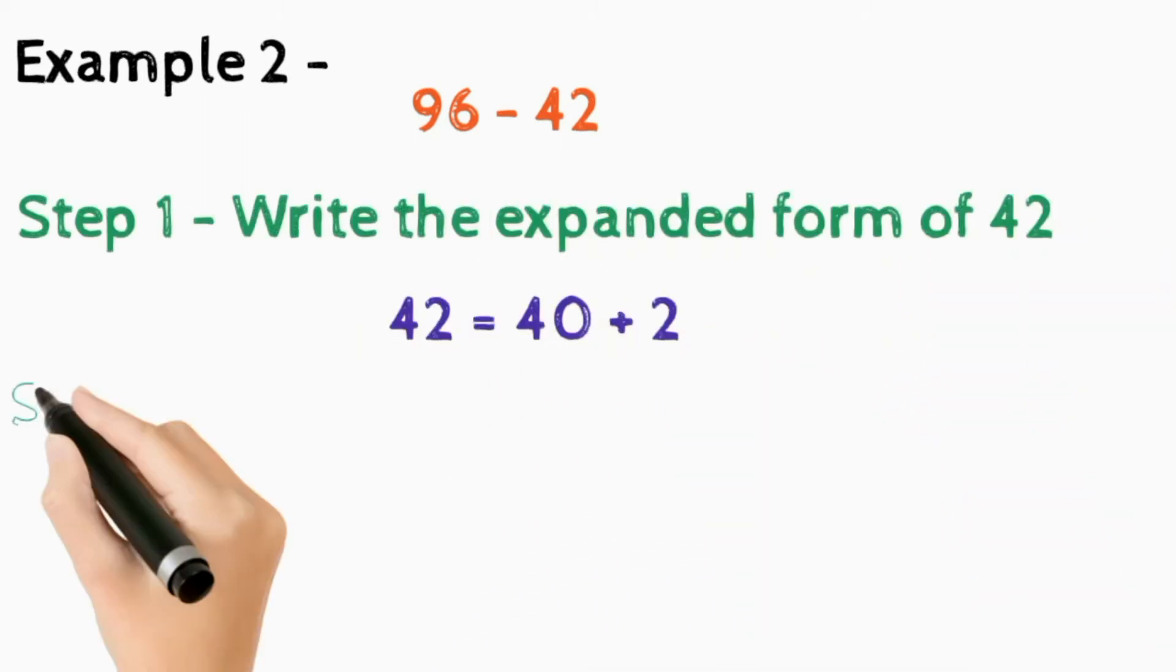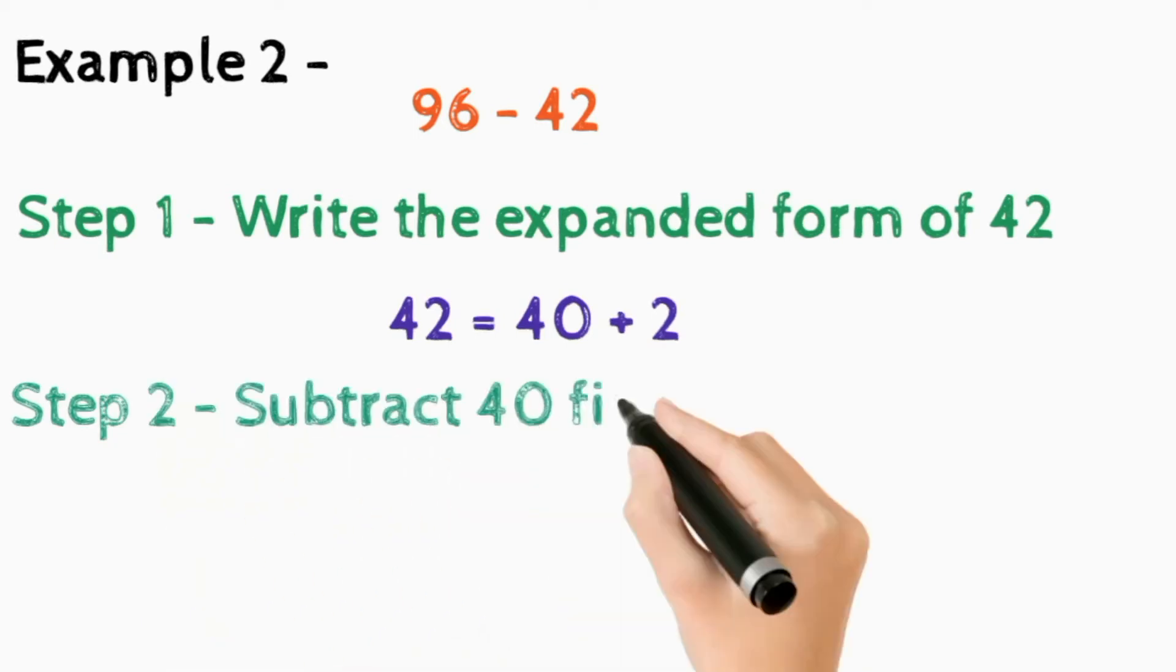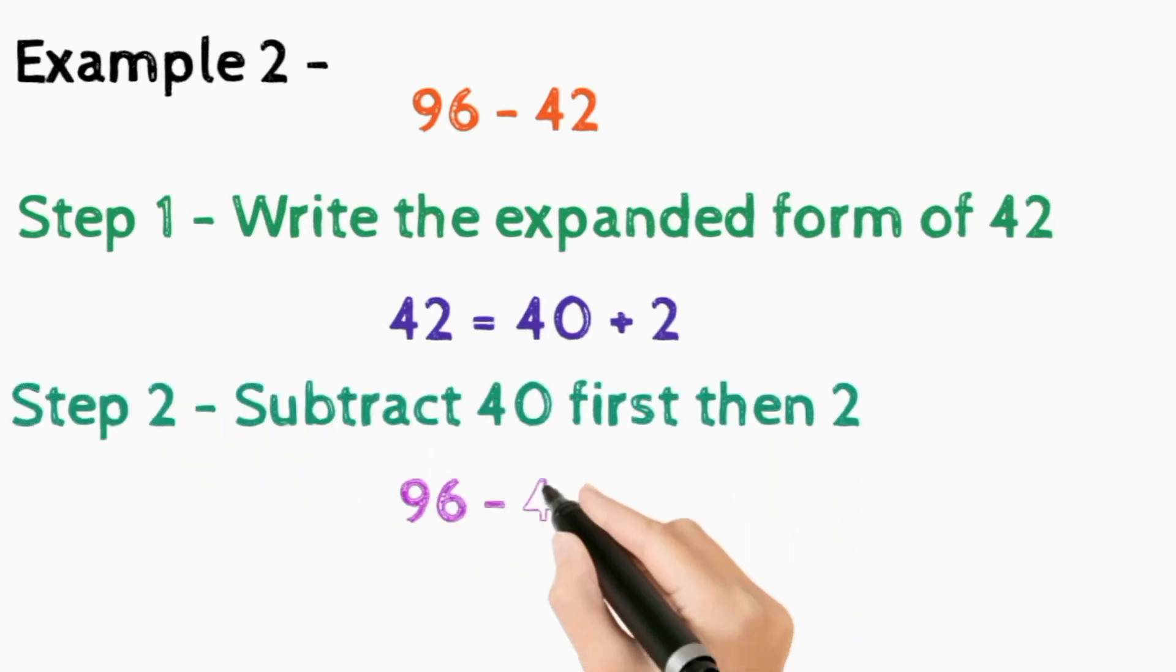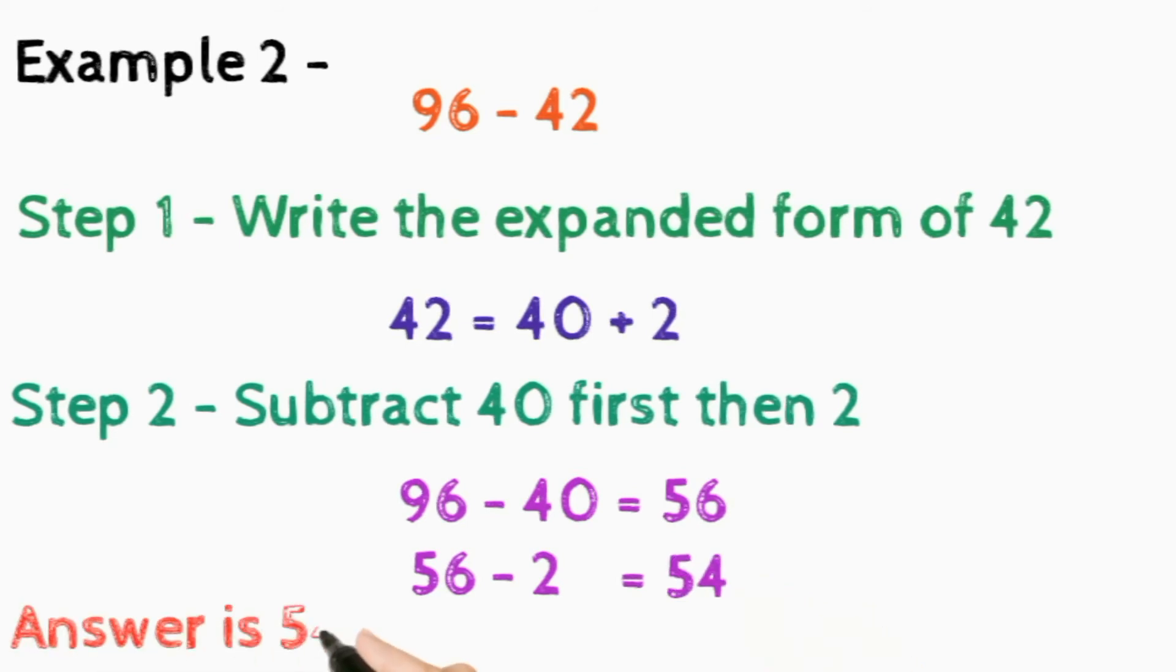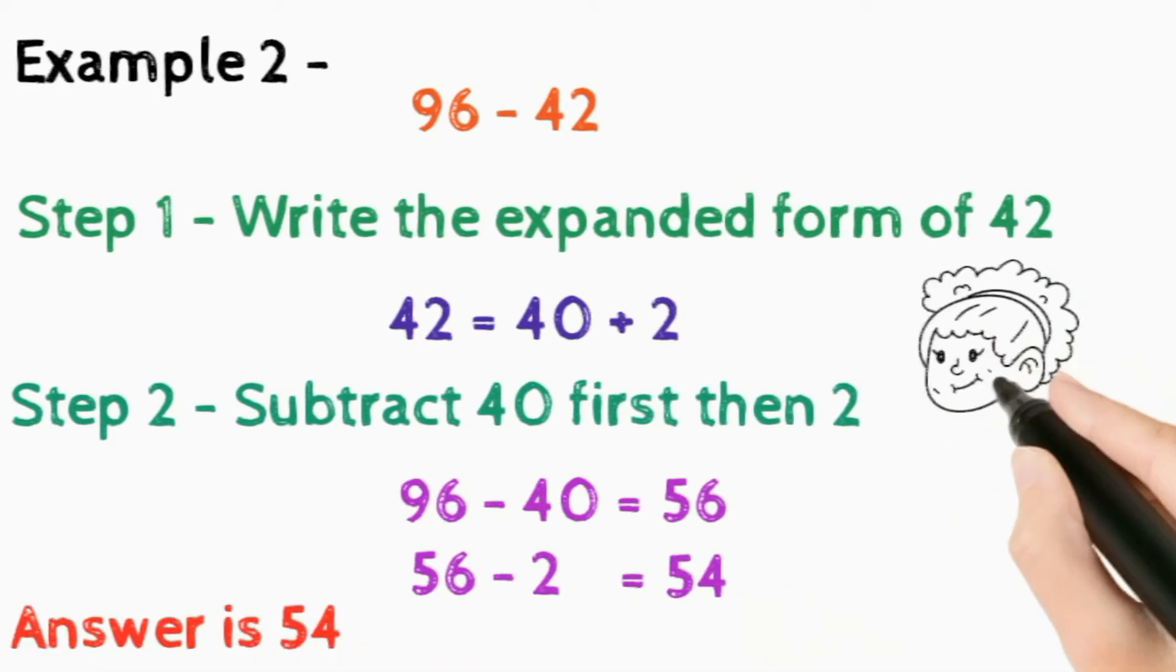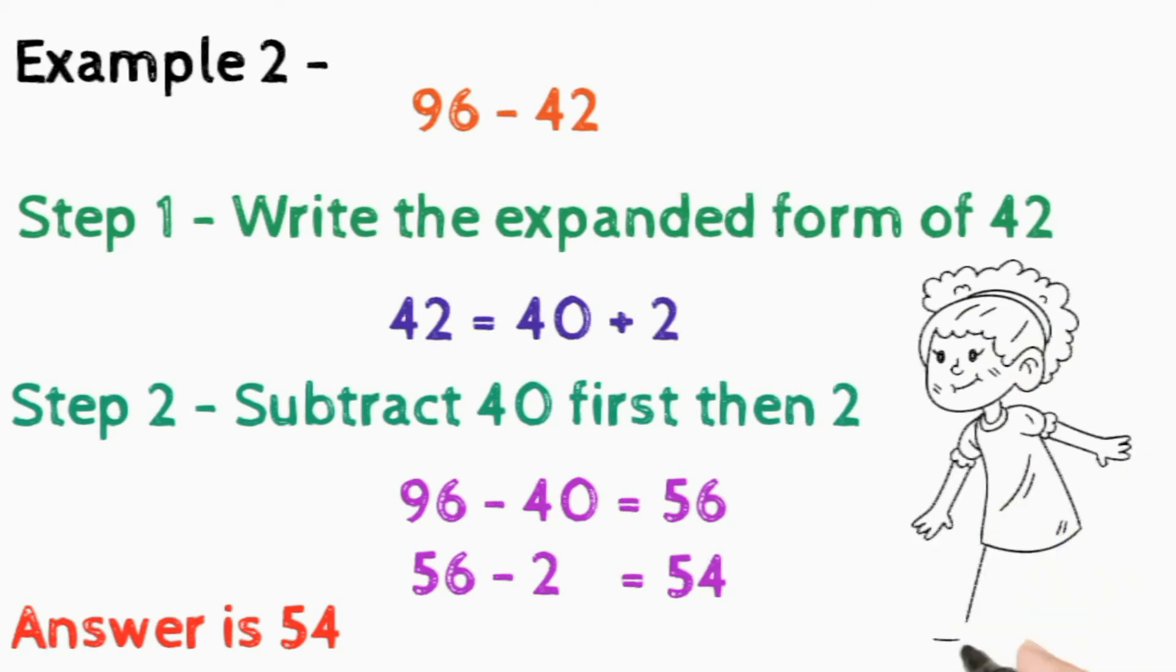So 42 is equal to 40 plus 2. In step 2, subtract 40 first then 2. So 96 minus 40 is equal to 56, and 56 minus 2 is equal to 54.